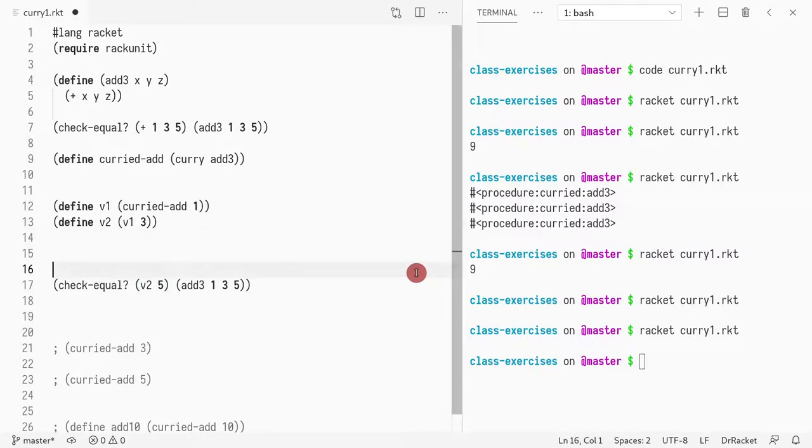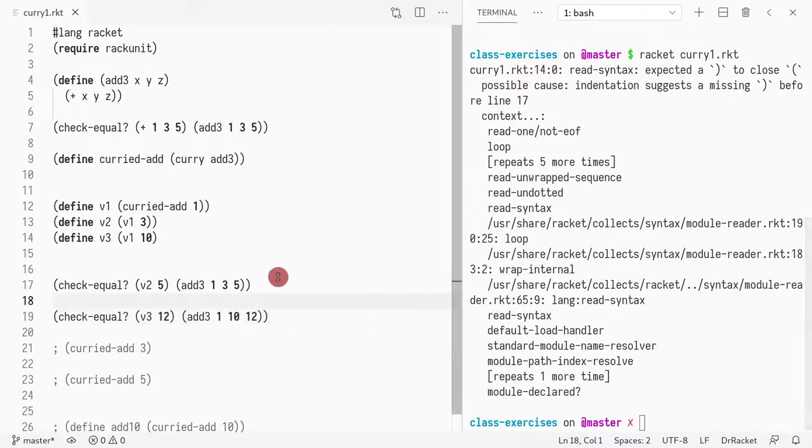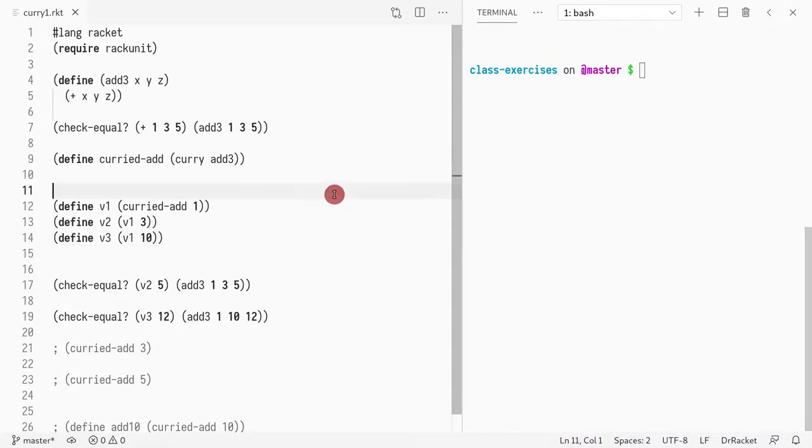Additionally if I define v3 as v1 and 10, now what I'm doing is check equal v3 to be 12. This is the same as add 3 where I assign 1 to x and then I assign 10 to y and finally I assign 12 to z. I forgot a parenthesis here.